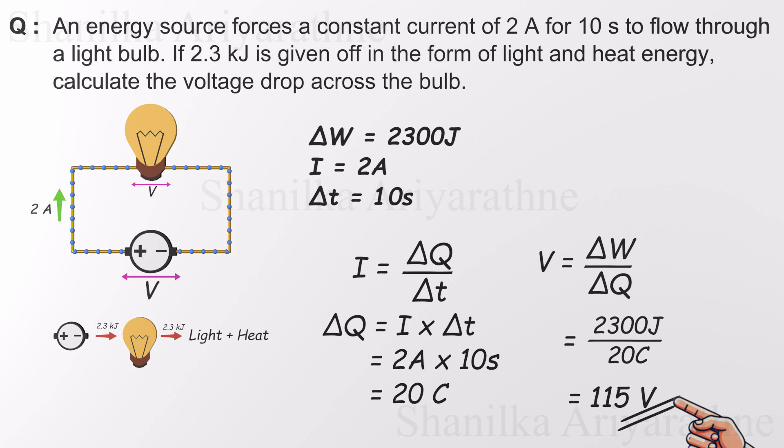That means the voltage drop across the light bulb is 115 volts, just the right amount to keep the current flowing and the bulb glowing steadily for those 10 seconds.